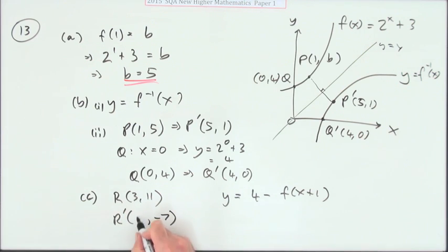So if it was at 3, it's going to go to 2. So you are 2, negative 7.